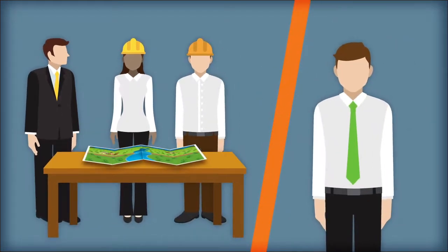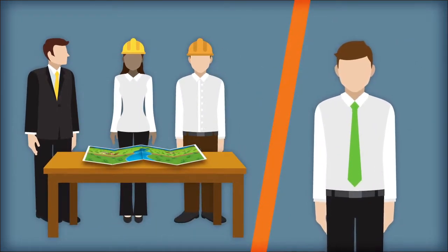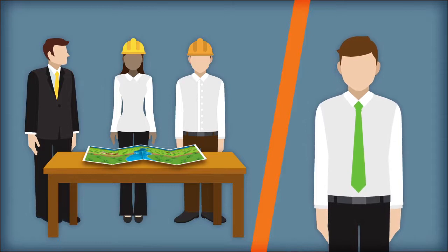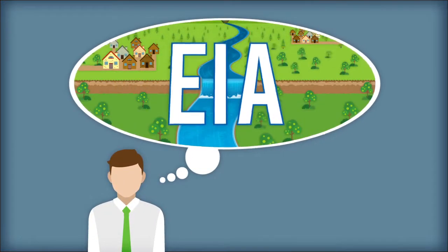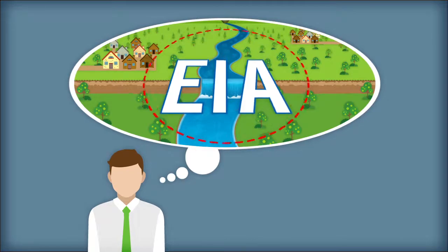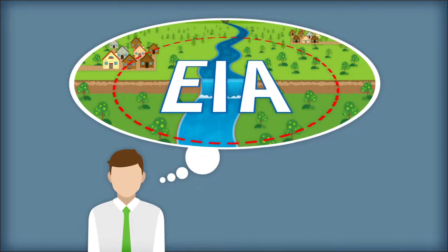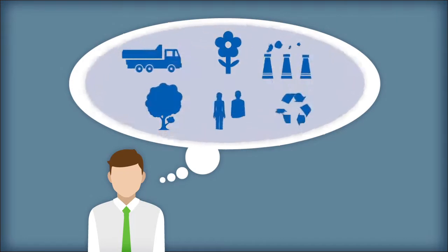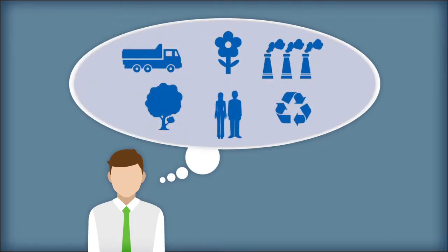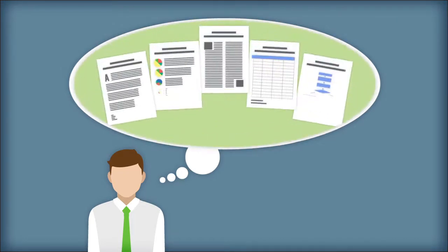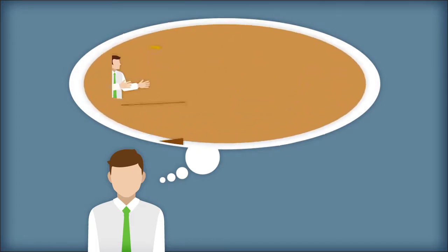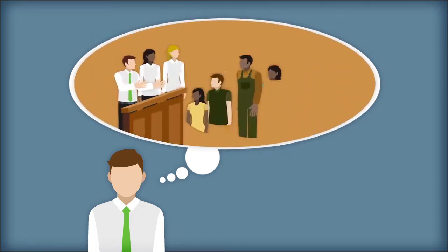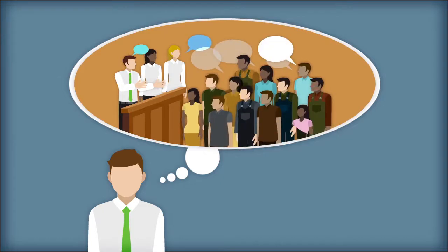Unfortunately, scoping is often done before the reviewers are involved. In many cases, EIA reviewers are left to determine after the fact whether the scoping was done correctly, whether the correct number of topics and scenarios were contemplated, and whether all the information and perspectives were considered. Was there an opportunity to solicit views and comments from all the key stakeholders?